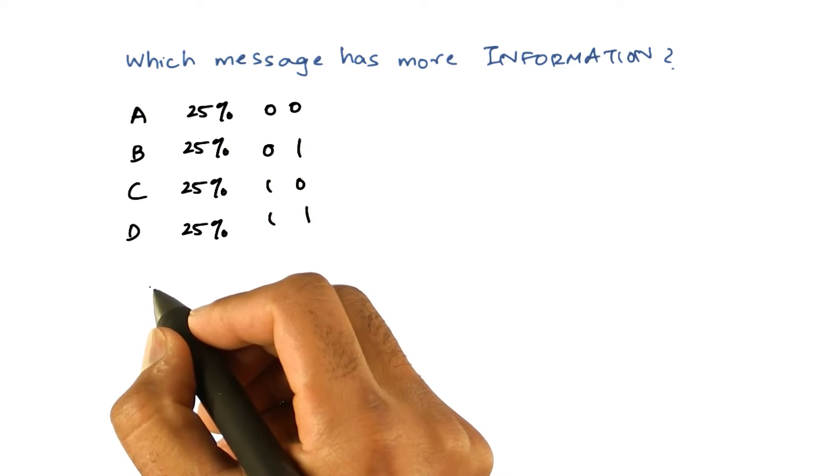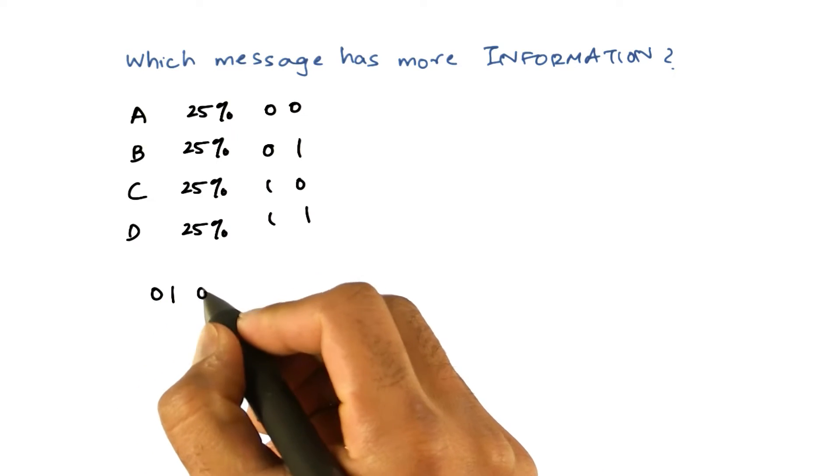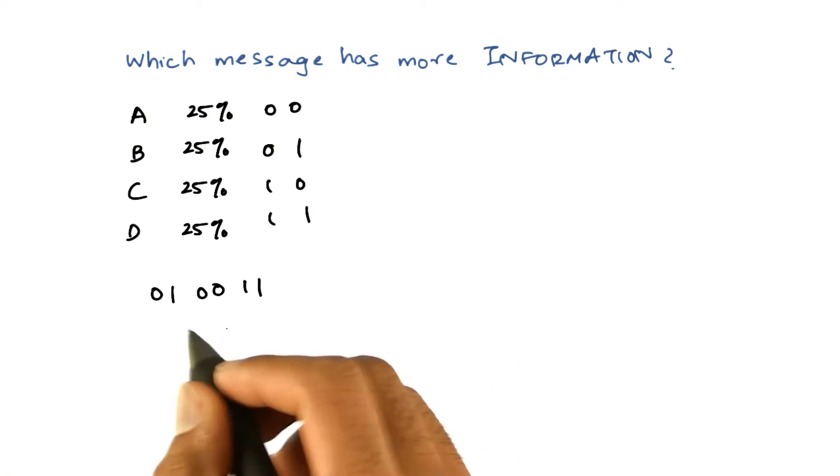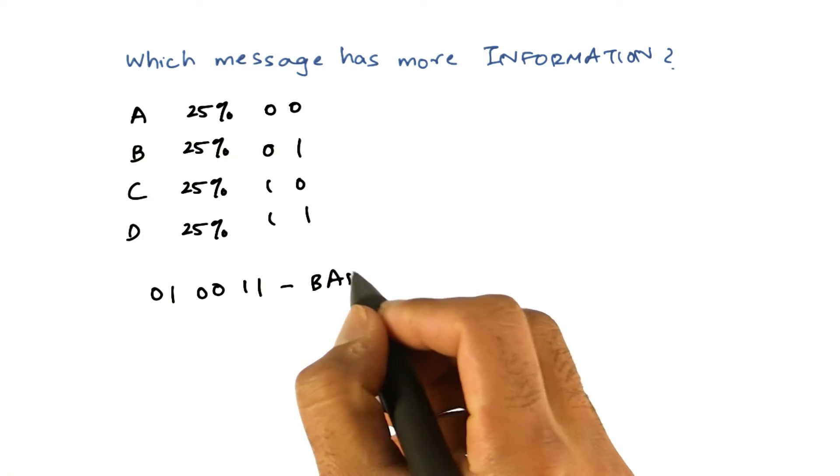Which means if we have a sequence such as 0, 1, 0, 0, 1, 1, the six bits spell out the word B, A, D—bad.